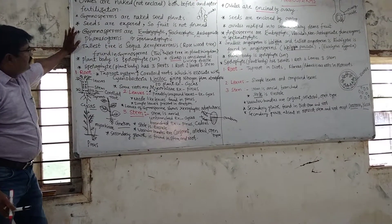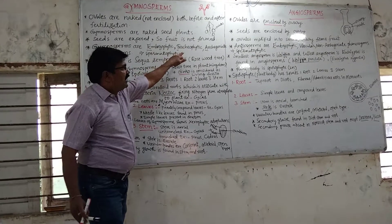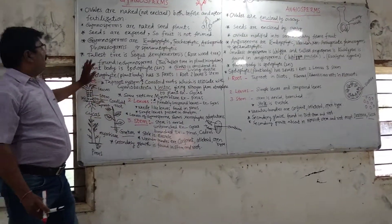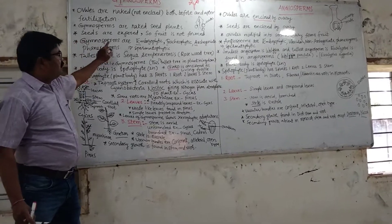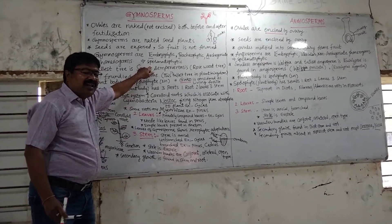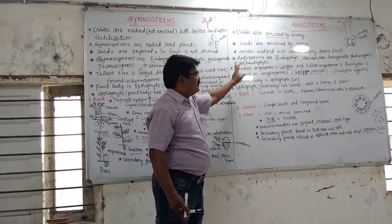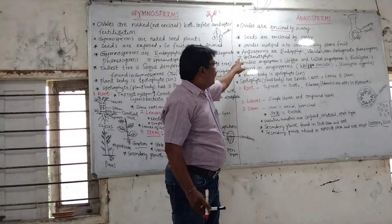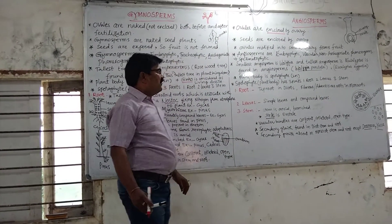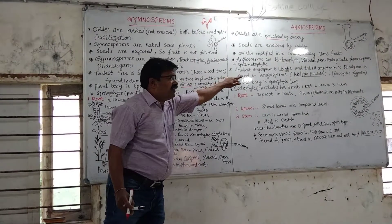Gymnosperms are epiphytic, tracheophytic, and archegoniates. They also possess seeds and belong to spermatophytes — plants that spread by seeds. Gymnosperms are archegoniates, while angiosperms are non-archegoniates.